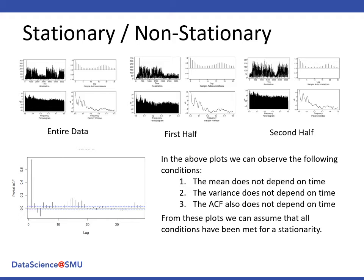Looking at the stationarity of the data, you can see that our mean doesn't depend on time. The variance is pretty much all over the place. Even looking at the ACF, when you split these two up, you can look at the first half and the second half — they kind of match, but there is a little bit of a difference. Based on all three of these, we're saying that we're dealing with a stationary dataset.